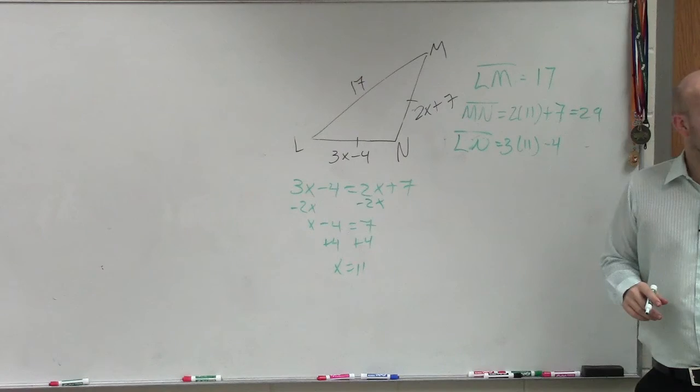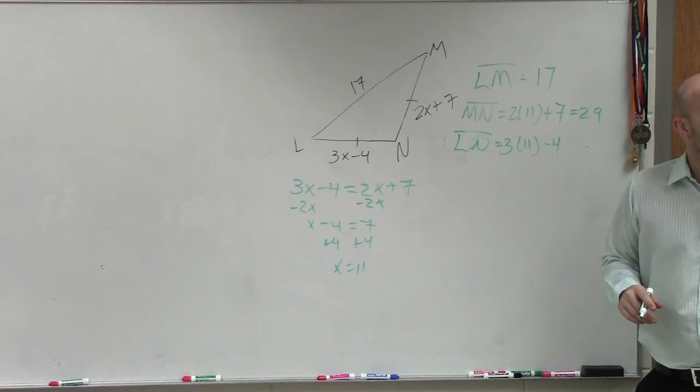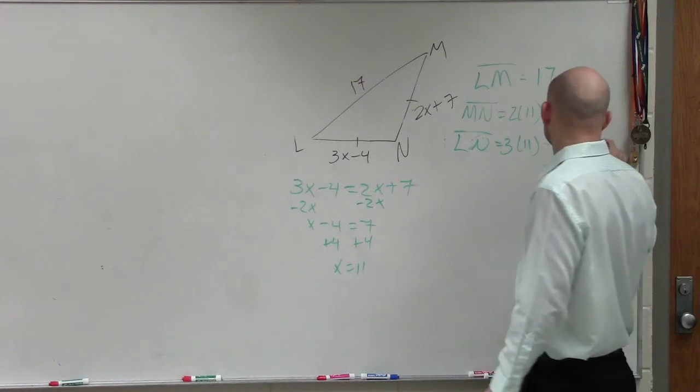3 times 11 is 33. Terrell, 3 times 11 is 33 minus 4 is equal to 29.